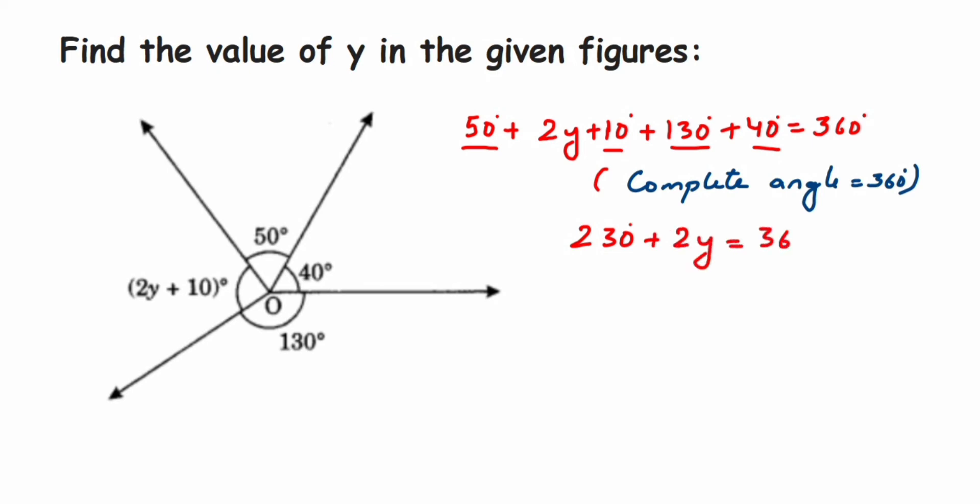Now transpose 2y to the other side. So 2y is equal to 360 degrees minus 230 degrees. 230 is positive, when you transpose this to the other side it comes in negative. So 360 minus 230 will be 130, so 2y is equal to 130 degrees.